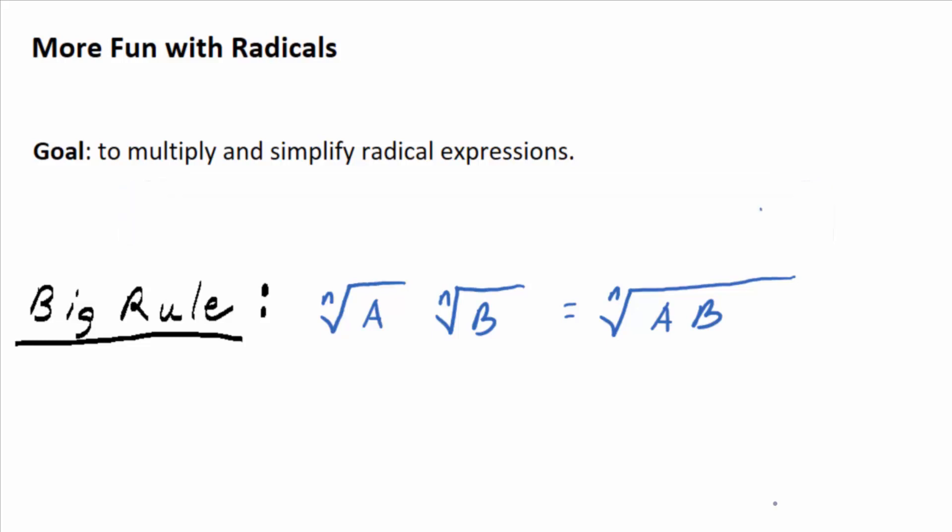The nth root of A times the nth root of B is equal to the nth root of A times B, but you can also think of it the other way around. The nth root of A times B is equal to the nth root of A times the nth root of B, which we kind of already talked about, right? We talked about the fact that an nth root breaks up over multiplication, doesn't it? And that's exactly what's happening here.